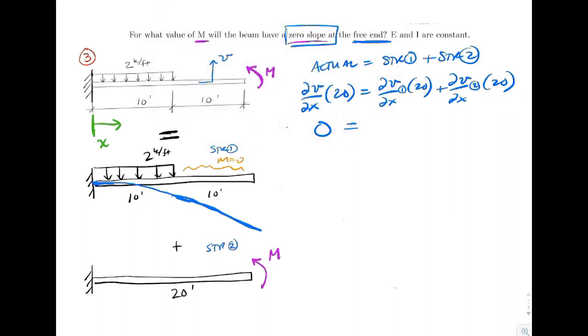Let's look at the deflection in structure two. We've got an applied moment at the end. So it's going to cause the beam to curl up. And so I need to compare these two values. That would be the slope in structure one at the end, and that would be the slope in structure two at the end.